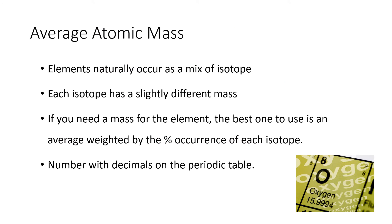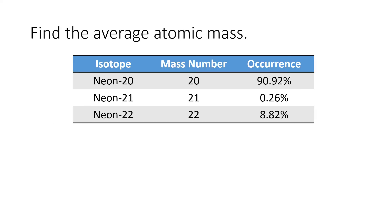For calculating average atomic mass: each element naturally occurs as a mix of isotopes, each isotope has a slightly different mass, and each isotope occurs at a different percentage. Some elements occur with close to 100% of one isotope — like 99.9% of one isotope and just a trace of others. Some others occur at like a 60-40 ratio. The best mass to use for calculations is an average weighted by the percent occurrence of the isotopes — and that's the number on the periodic table with all the decimal places after it.